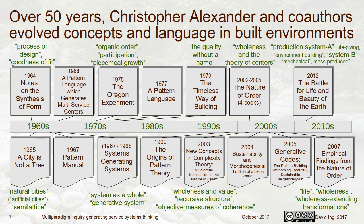In 2002 and 2005 he released the Nature of Order. A really interesting 2003 paper on his website — 'New Concepts in Complexity Theory: A Scientific Introduction to the Nature of Order' — discusses wholeness and value, recursive structure, projected measures of coherence, sustainability, and morphogenesis. In 2005, Generative Codes talks about wholeness-extending transformations. In 2012 he published his 1985 battle book work. People who start with the 1977 Pattern Language book are missing everything before and after.